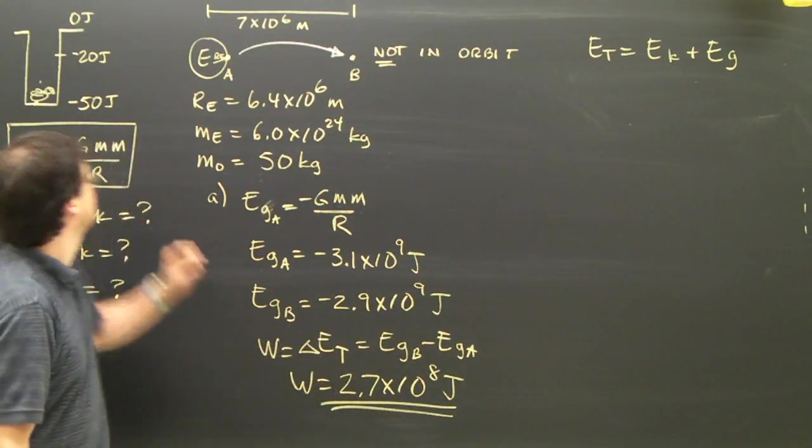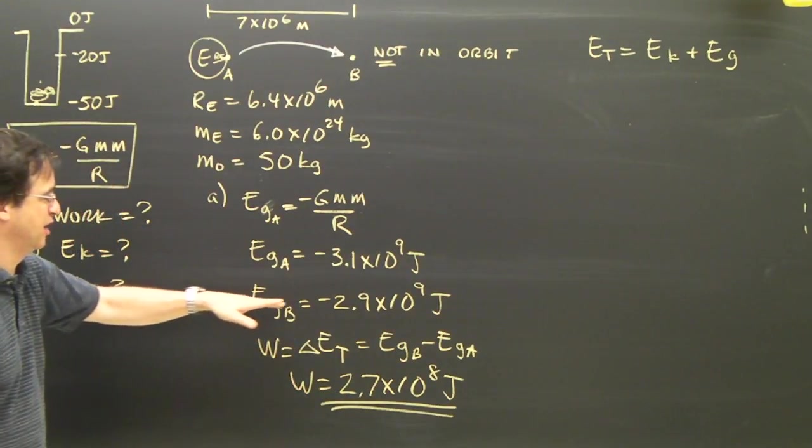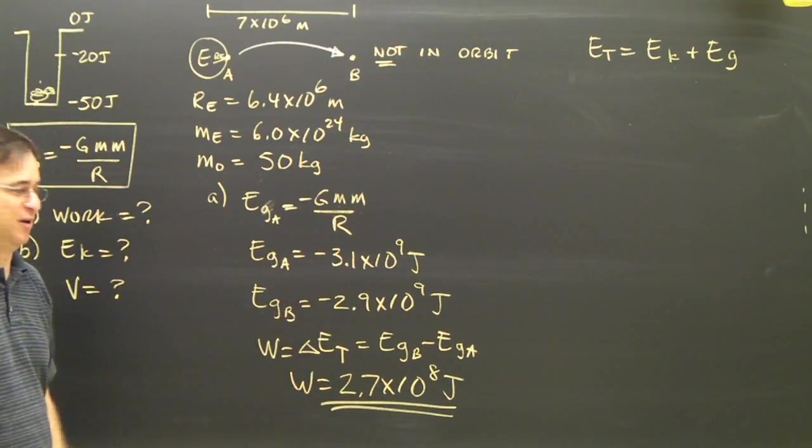we find the difference between the two just like I did here. I have to add 2.7 times 10 to the 8 joules to get from this number to that number, and it's positive.